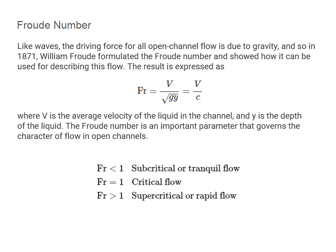Like waves, the driving force for all open channel flow is due to gravity. In 1871, William Froude formulated what is known as the Froude number and showed how it can be used for describing this flow. The Froude number is expressed as the velocity V divided by the square root of g times Y, or equivalently, V divided by C. Here V is the average velocity of the liquid, Y is the depth, and the Froude number is an important parameter that governs the character of flow in all open channels.